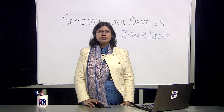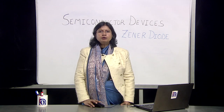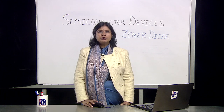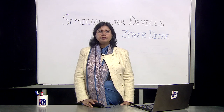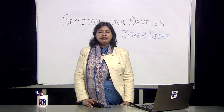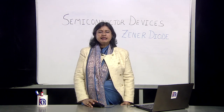Even if there are some ripples in the current — that is, the amount of current is varying slightly — these fluctuations are completely ignored by the Zener diode, and across the load resistance you are always going to get an output voltage which is fixed. Thus a simple Zener diode acts like an excellent voltage regulator.